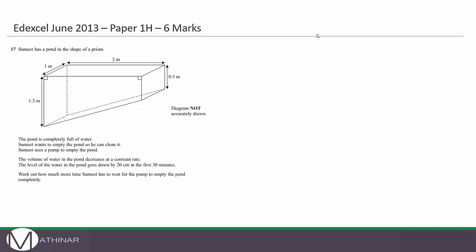Sumit has a pond in the shape of a prism — specifically a trapezium prism. The pond is completely full of water. Sumit wants to empty the pond so that he can clean it, and he uses a pump to empty it. First thing I'm going to do is work out the volume of this prism.